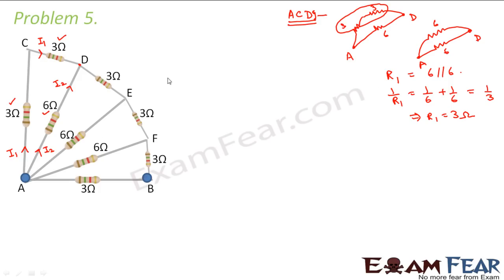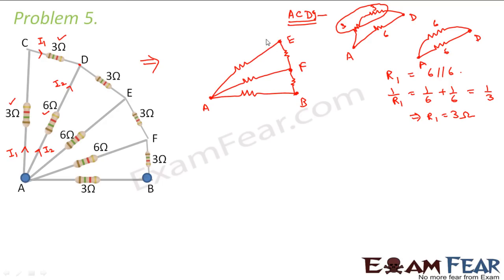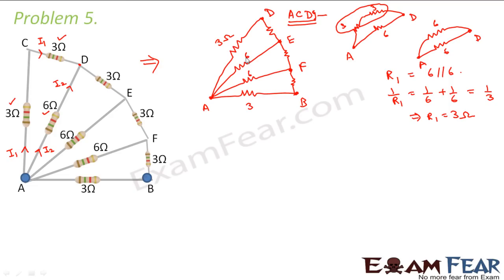Now the circuit becomes a little simpler. Let us redraw: point A, point B, with one resistance to point F, another from F, another to point E, and another from E to point D. Instead of drawing the ACD section, we replace it with R1 = 3 ohms. All other resistance values are kept as given in the problem, making the diagram simpler.